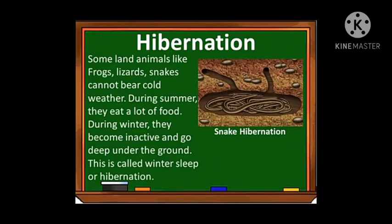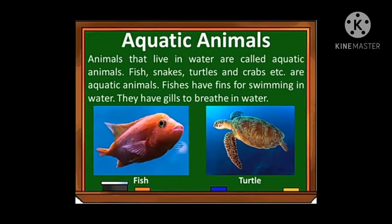The next topic is hibernation. Some land animals like frogs, lizards, and snakes cannot bear cold weather. During summer, they eat a lot of food. During winter, they become inactive and go under the ground — this is called winter sleep or hibernation. Similar to the character Kumbhakarna, who would sleep for six months and wake up to eat hugely, these animals eat when active and then sleep through winter.